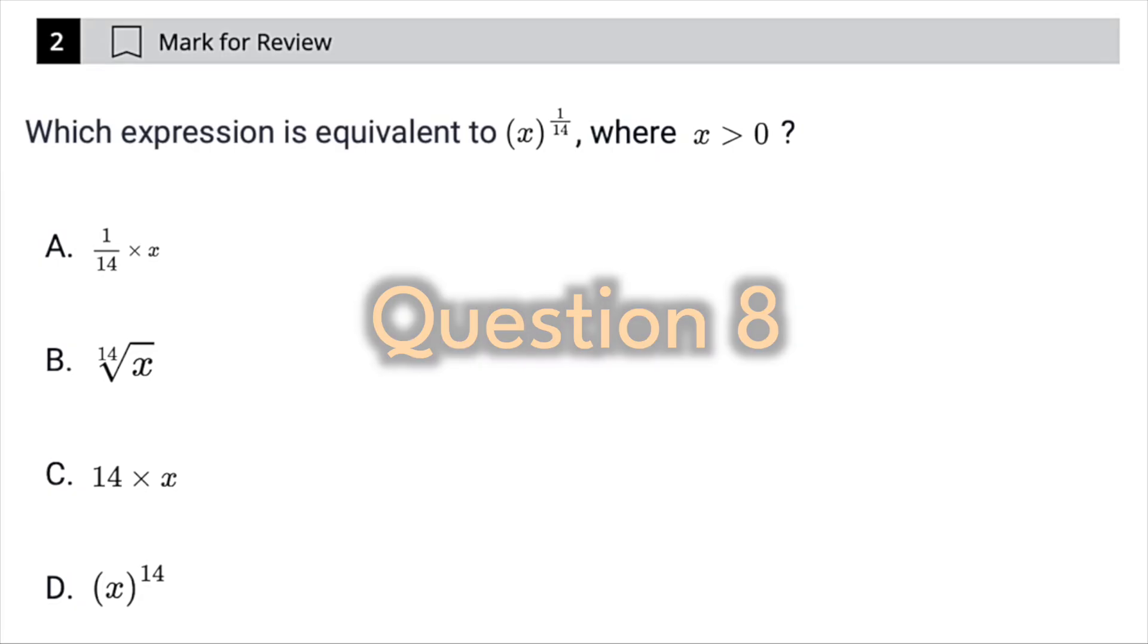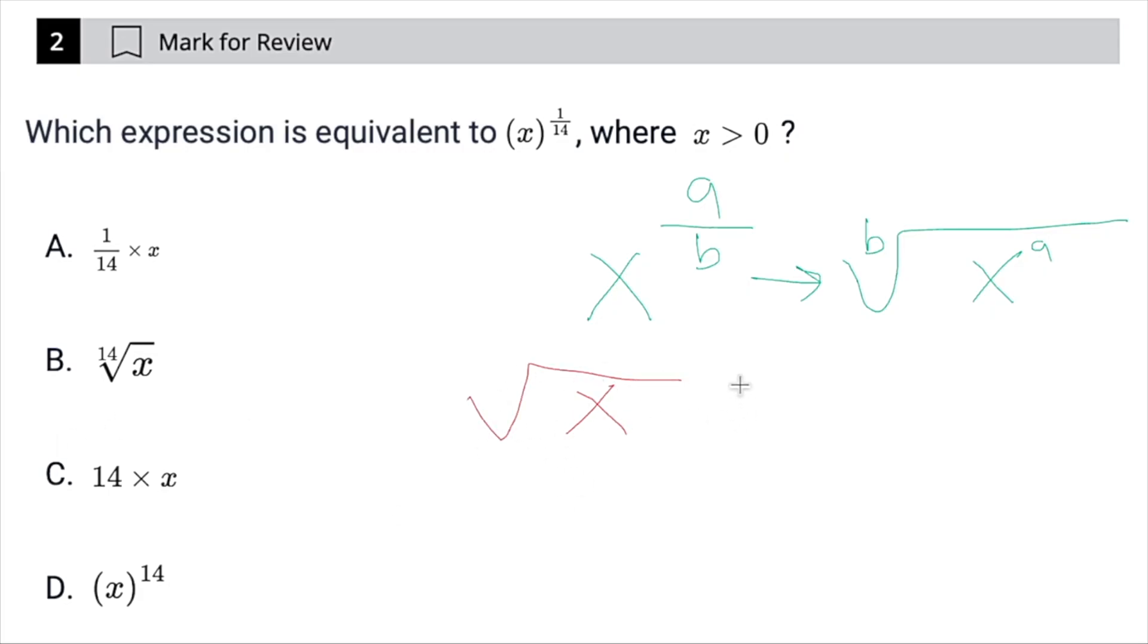And the rule for this is basically the fractional exponent rule. So if I have x to the a over b, that is going to be the same as the b root of x to the a. And a really easy way to think about this is a square root. We know that, or at least you should know that, the square root of something, we'll say the square root of x, is the same as x to the 1 half, right?